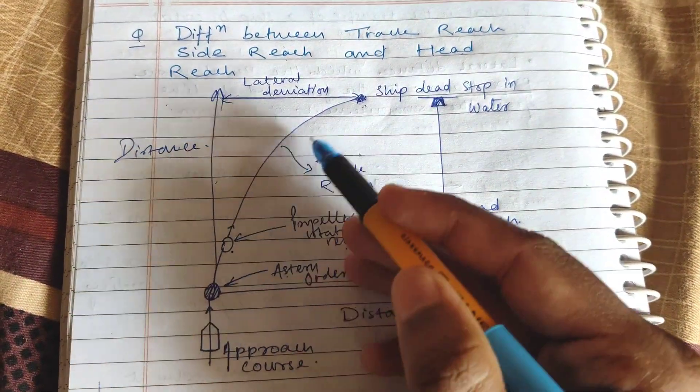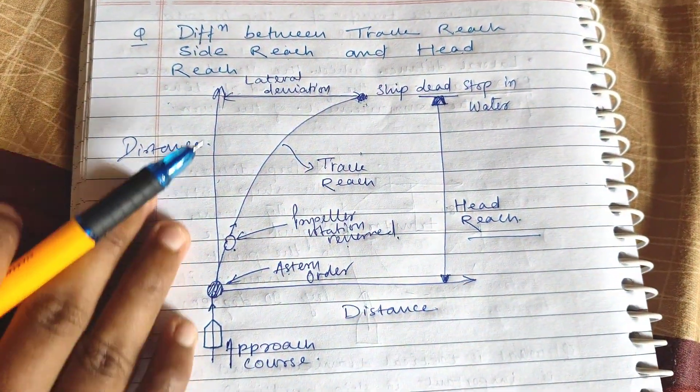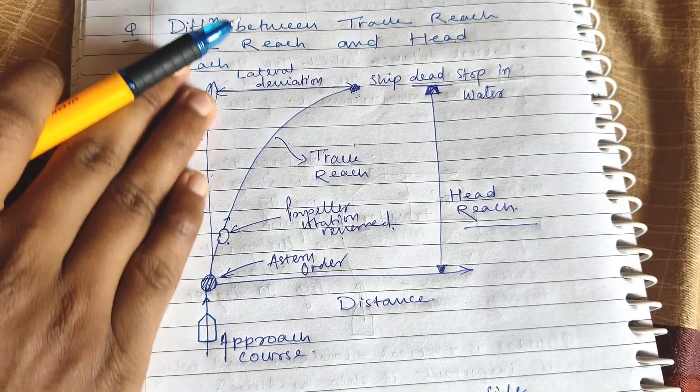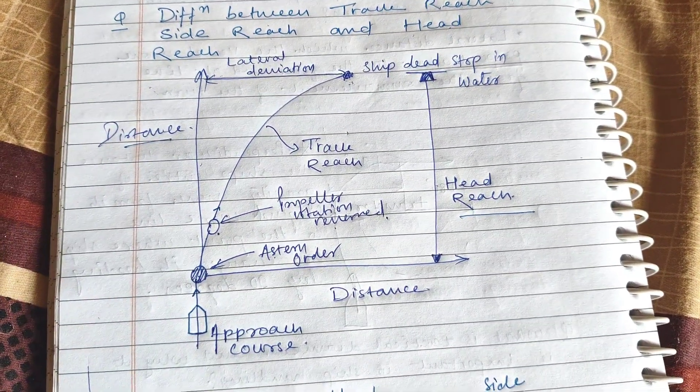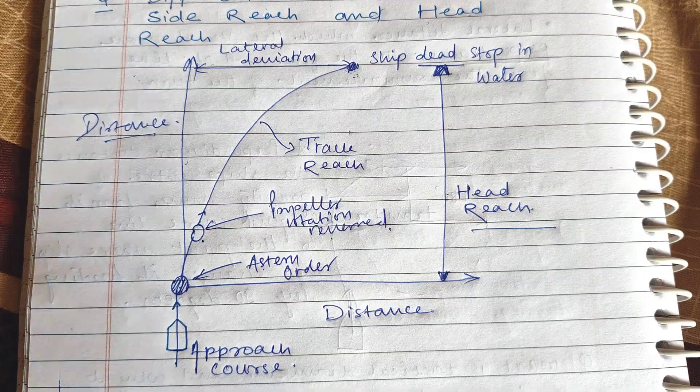The curled part is known as track reach. This straight ahead distance is known as head reach, and the final one is side reach.